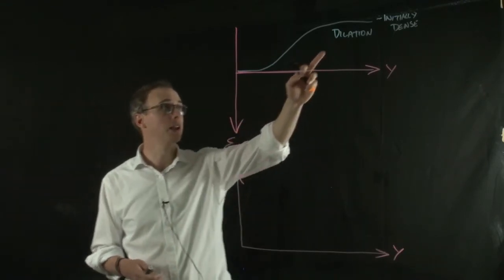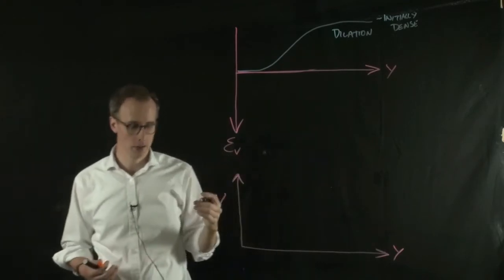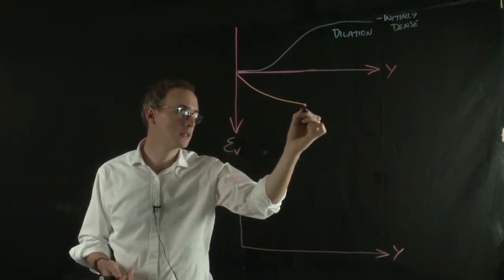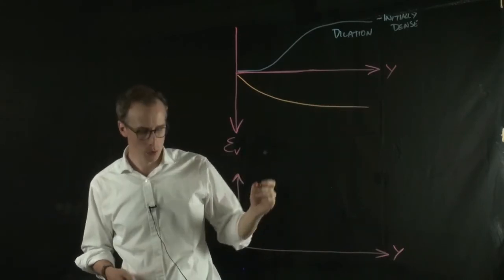So this is dilation for an initially dense material. For an initially loose material, it might look something like this. Well, we have compaction.